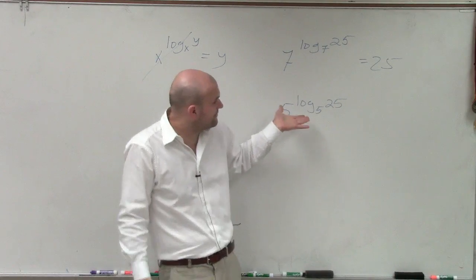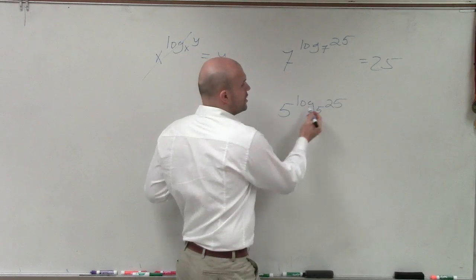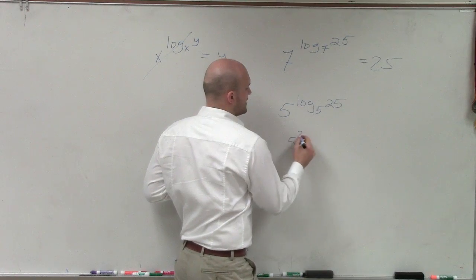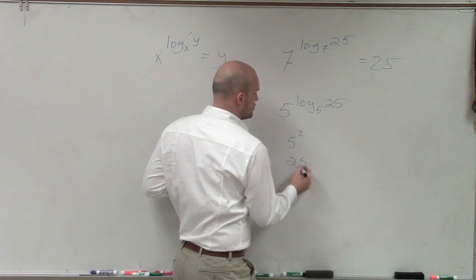if I rewrote the problem in this case, what I would do is if I had to evaluate log base 5 of 25, we know that's going to be 2. So I'd have 5 squared, which just equals 25, right?